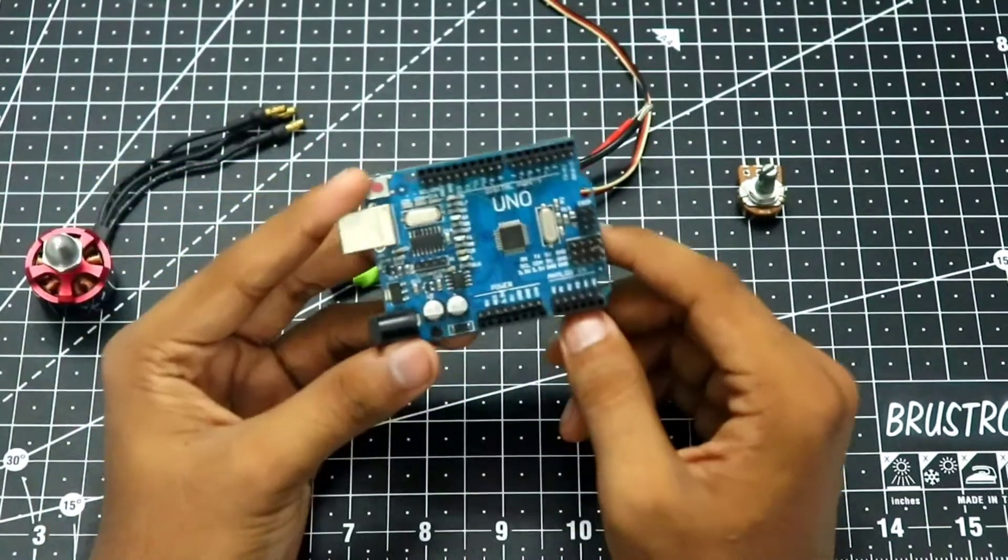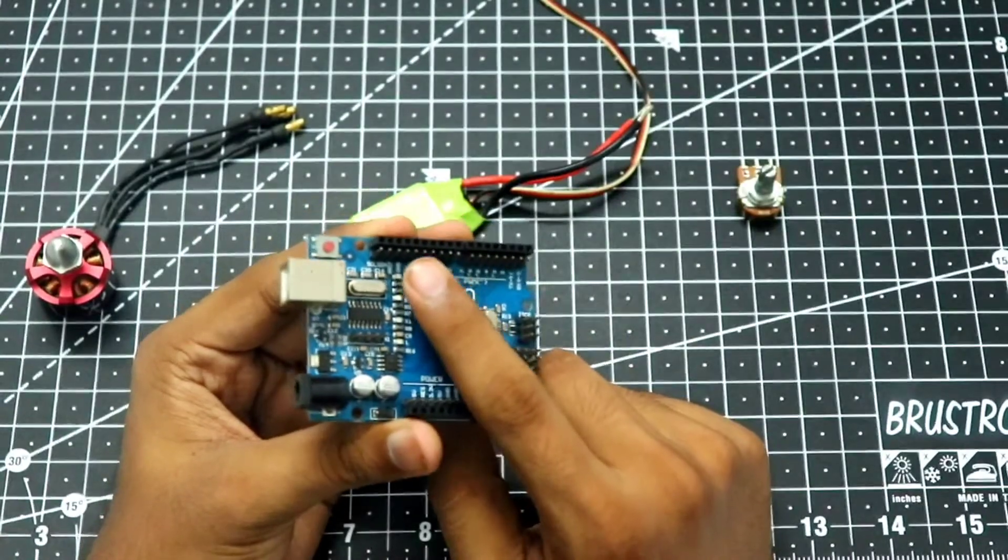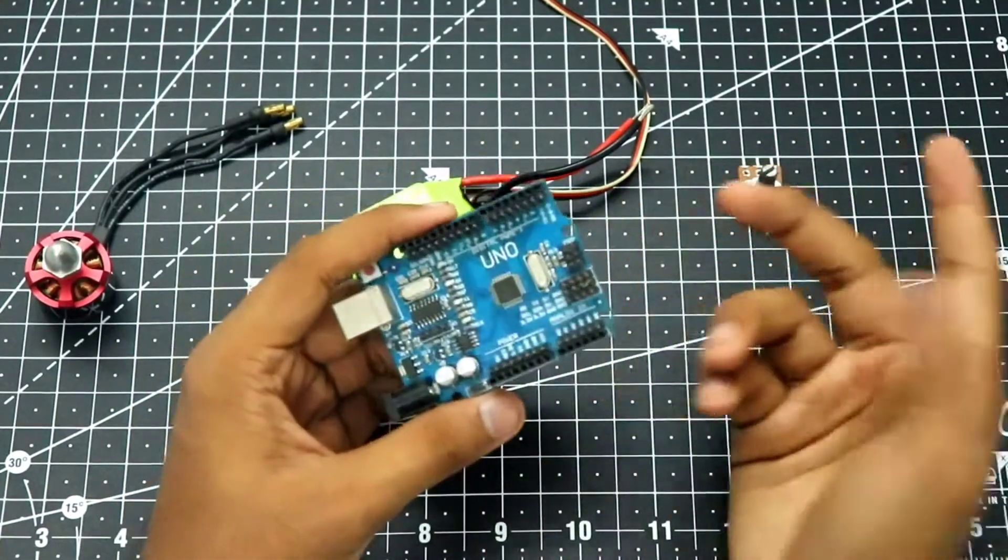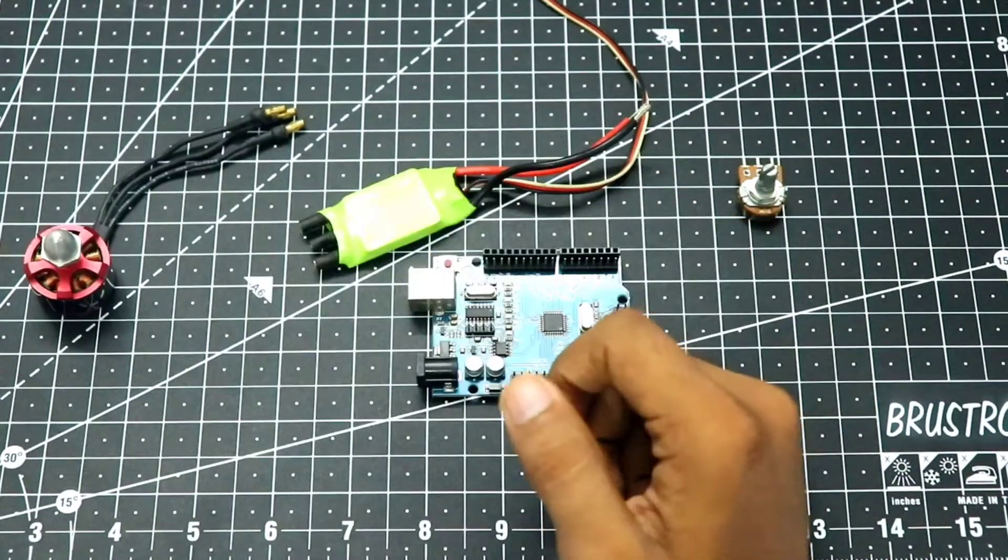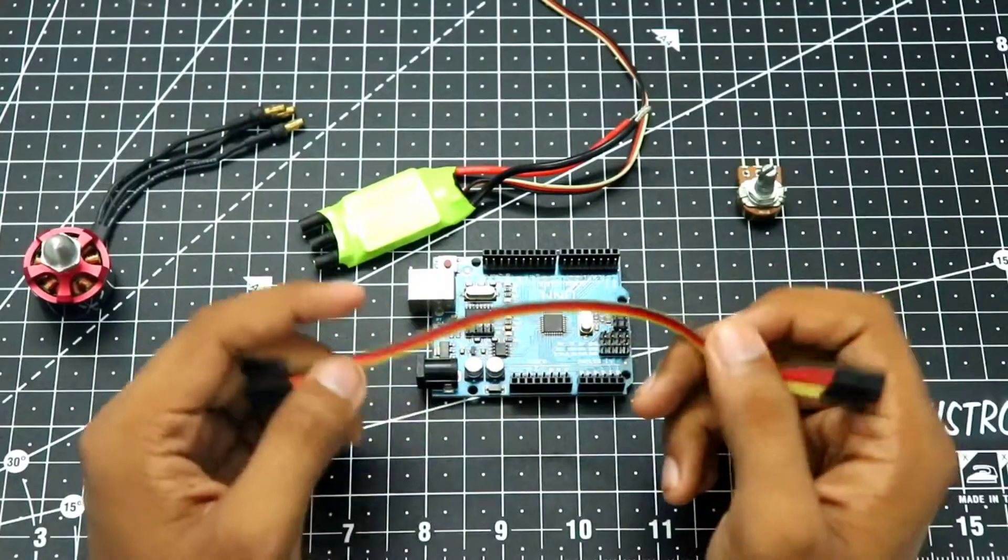Then of course we will need the Arduino. This is the Arduino Uno and as you can see, I have installed some extra pins over here and on this side so the connection is a lot more easier. Then at last, to connect all this, we need some jumper cables. So without further ado, let's get started.